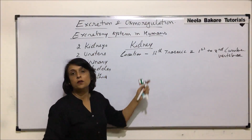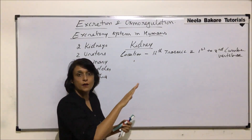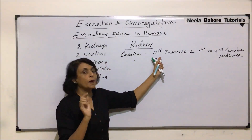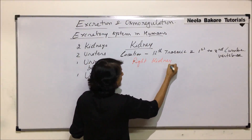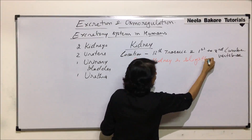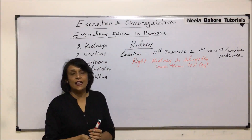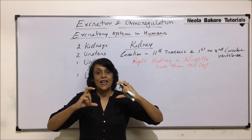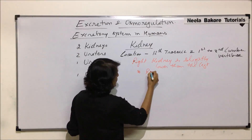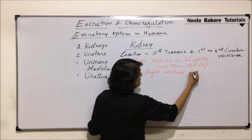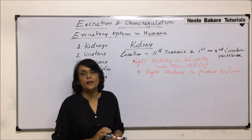The right kidney is slightly lower than the left. The left kidney is positioned along the 12th thoracic and 1st, 2nd, 3rd lumbar vertebrae. The right one is pushed lower by the liver — the right kidney is pushed by the liver and is therefore slightly lower as compared to the left one.